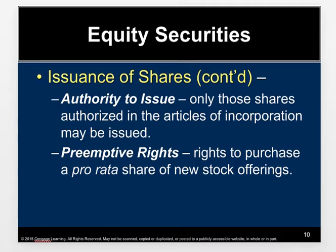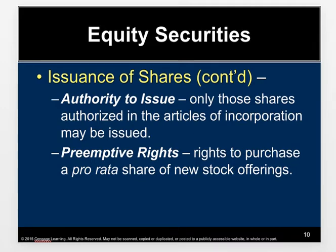Preemptive rights are very common in closed corporations — for example, in family businesses where you want to keep control within the family. Or maybe the founder owns 70% and wants to maintain control as the company grows. As the company needs more capital to invest in fixed assets, it will issue new shares, but the majority shareholder will have preemptive rights to maintain their ownership percentage.